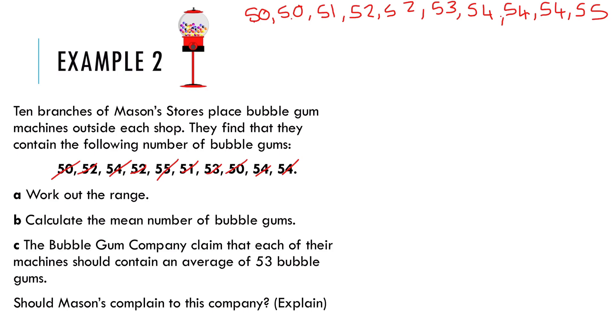And a good way to check is just count that you've got the same numbers that they've got. So they've got 10 numbers. 1, 2, 3, 4, 5, 6, 7, 8, 9, 10 numbers. Good. Part A says work out the range. So remember the formula for range is highest take away lowest. Our highest number is 55, our lowest is 50, which means this data has a range of 5.